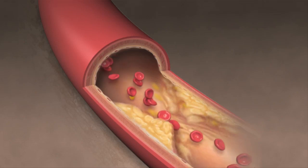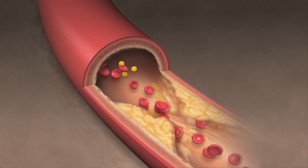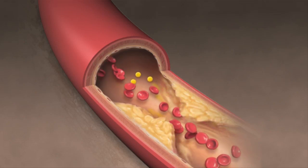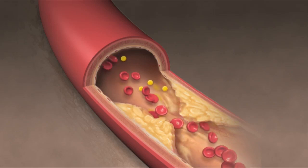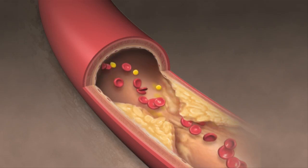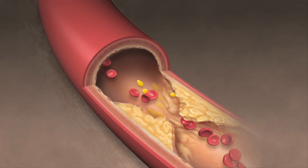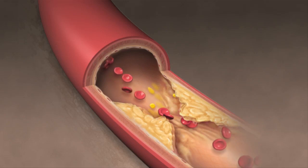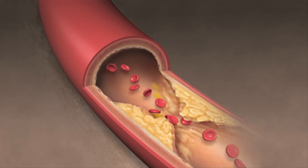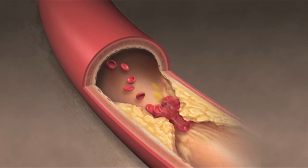The channel through which blood flows becomes narrower. Plaque is fragile and often rough on the surface, making it more likely for blood clots to form. It's possible for large clots to block the flow of blood entirely. In the brain, this can cause a stroke. In a coronary artery, a heart attack.